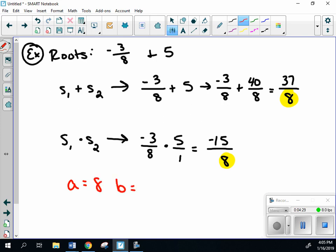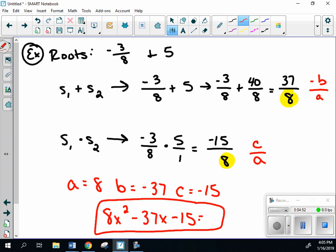b is opposite of what you see because this is -b/a, and this is c/a. So b = -37, c = -15. Our equation: 8x² - 37x - 15 = 0. That's our equation without using distribution—just using sum and product of roots.